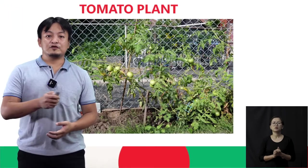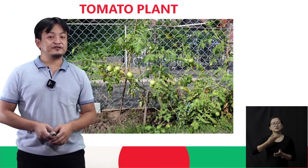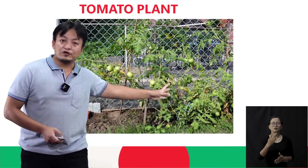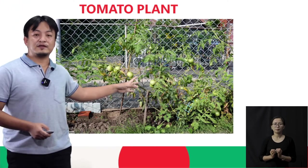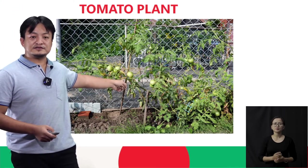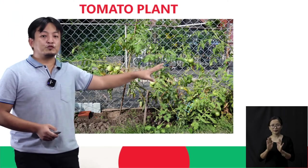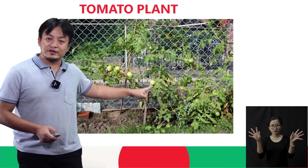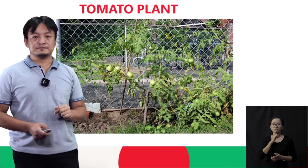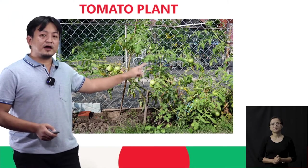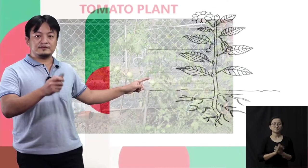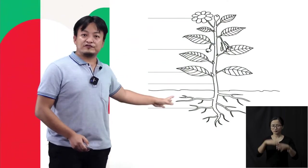So from here, I'm going to teach you about the different parts of the plant. So students, here we can see a tomato plant. This is how a tomato plant looks like. You can see this is the tomato and this is the plant. Now we cannot say that this is a tree, nor can we say that this is a very small plant. So from here, I will teach you the different parts of the plant. This is the structure of a plant.